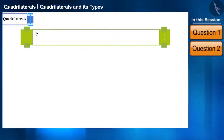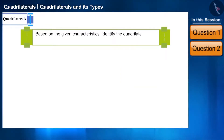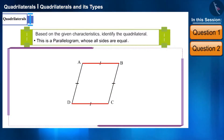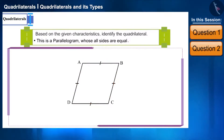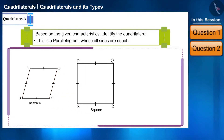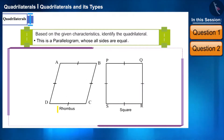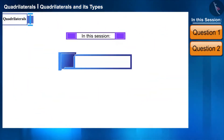Let's see one more question: here are some characteristics of quadrilaterals — identify the quadrilateral. This is a parallelogram whose all sides are equal. The opposite sides of a parallelogram are parallel and equal, but since all its sides are equal, it can be a rhombus. It can also be a square because all sides of a square are equal too. Since no information on the angles is provided, according to this statement it can either be a rhombus or a square.